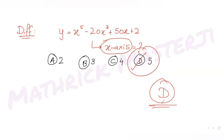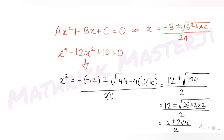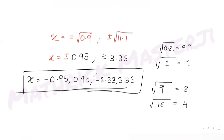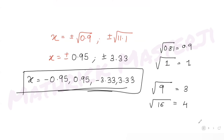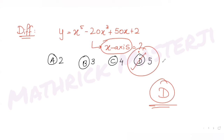To summarize: we found the first derivative, set it equal to zero, solved the resulting quadratic in x² to get four values of x, and checked the sign of the function at each. The rule is: the number of x-axis intersections equals the number of critical x-values plus one. With four critical values, we get five intersection points, matching option D. This approach applies whenever you need to find how many times a curve intersects an axis.